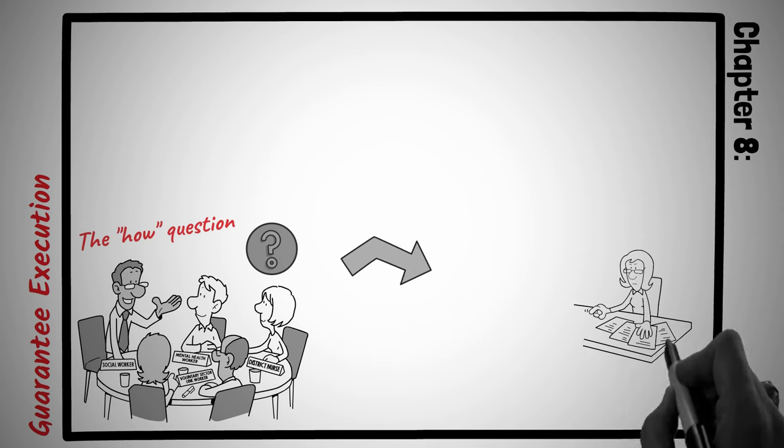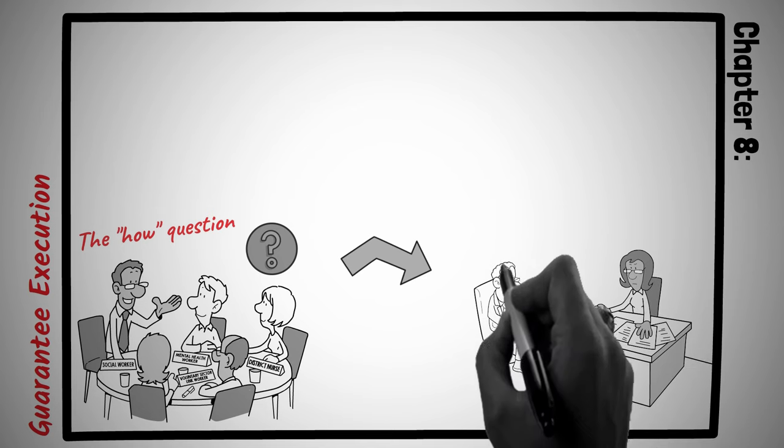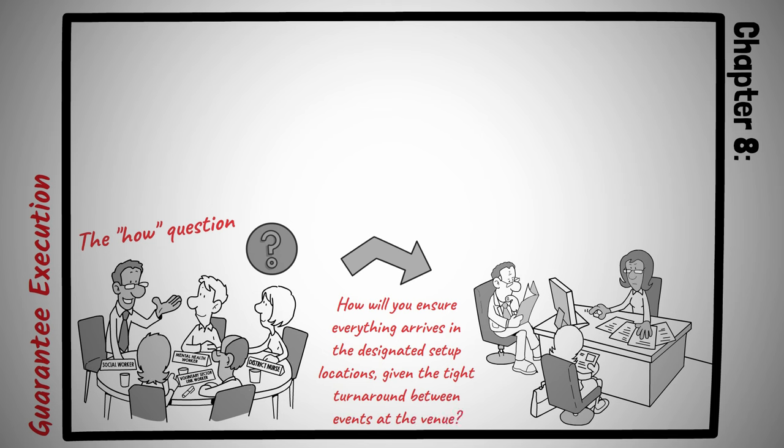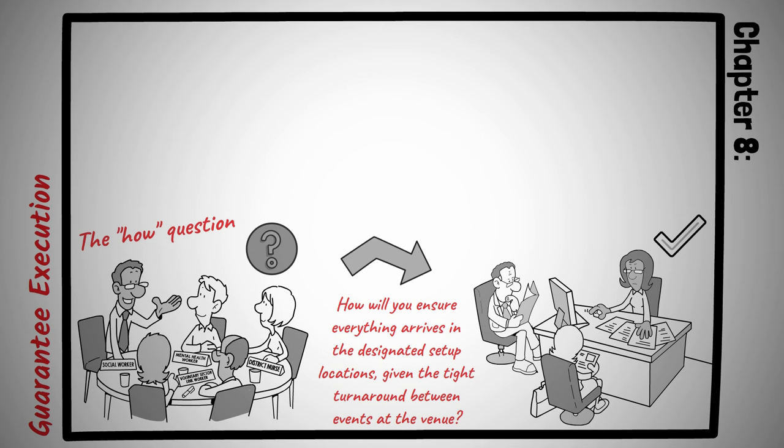Marcus, an event planner, is working with a new supplier for a major corporate event. They've agreed on the decor, delivery timelines, and costs. However, having faced issues with suppliers in the past, Marcus knows the importance of ensuring seamless execution. Instead of just sealing the deal, he asks, How will you ensure everything arrives in the designated set-up locations, given the tight turnaround between events at the venue? The supplier, now prompted to think through the logistics, outlines a detailed plan. This not only gives Marcus added assurance, but also encourages the supplier to be more accountable.